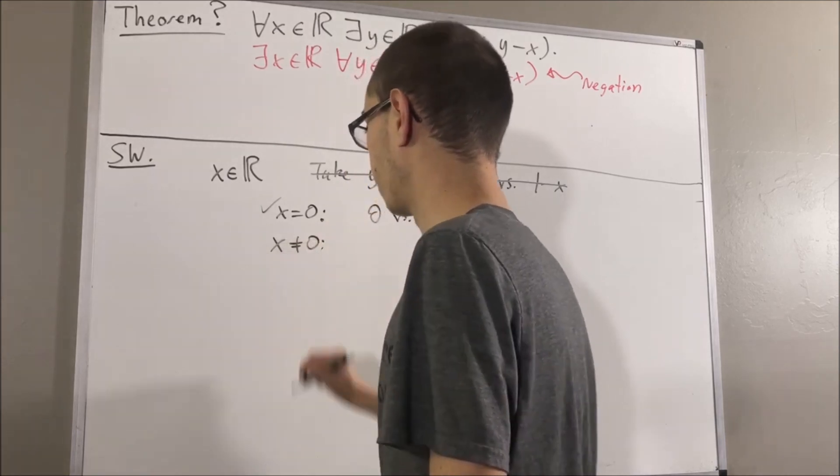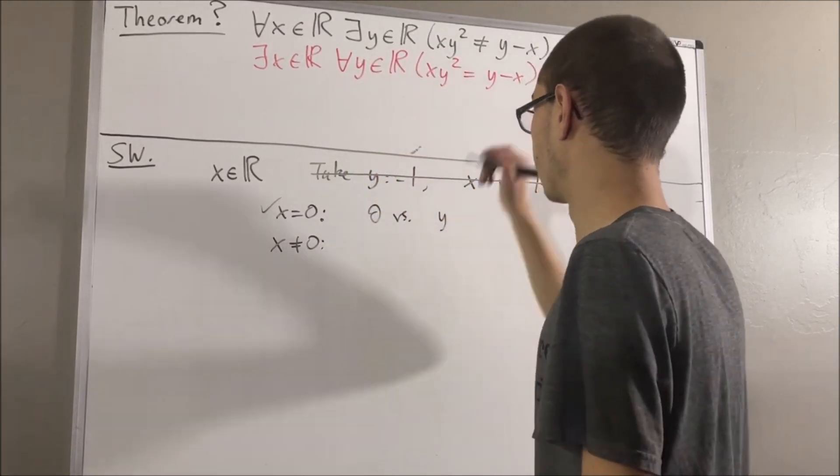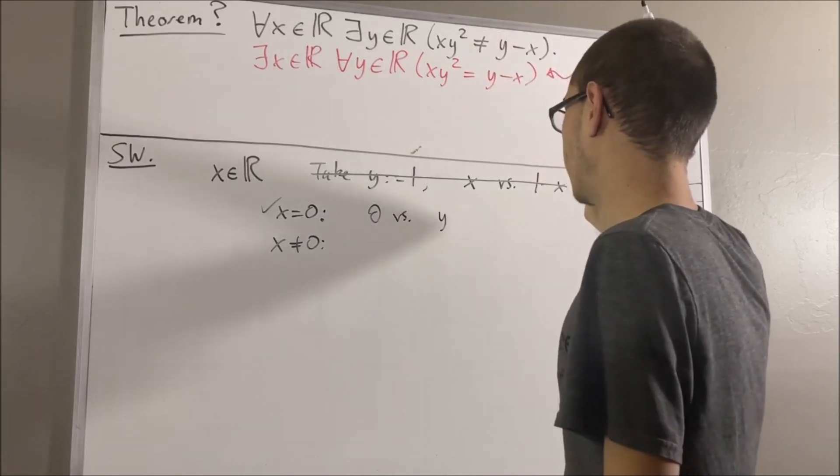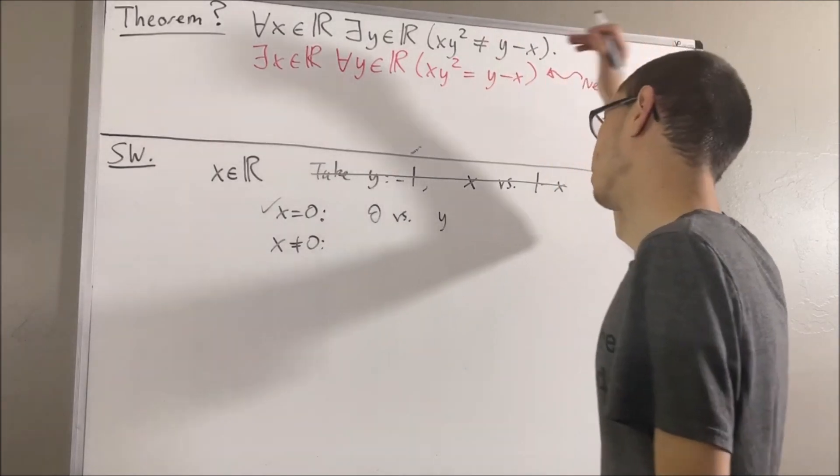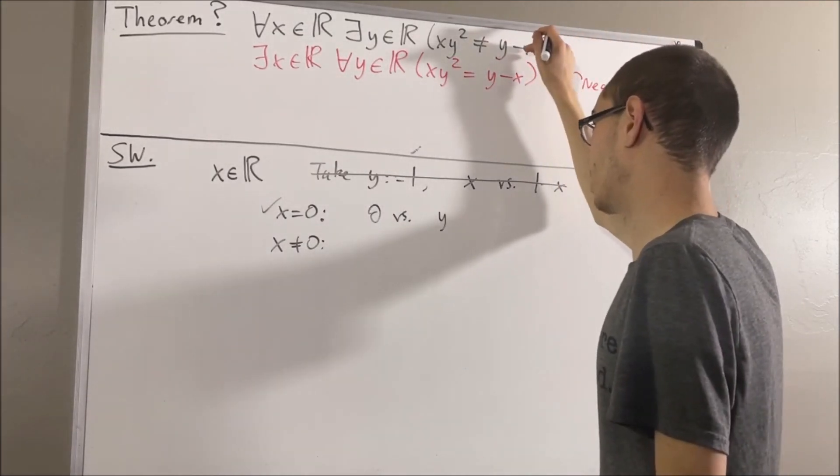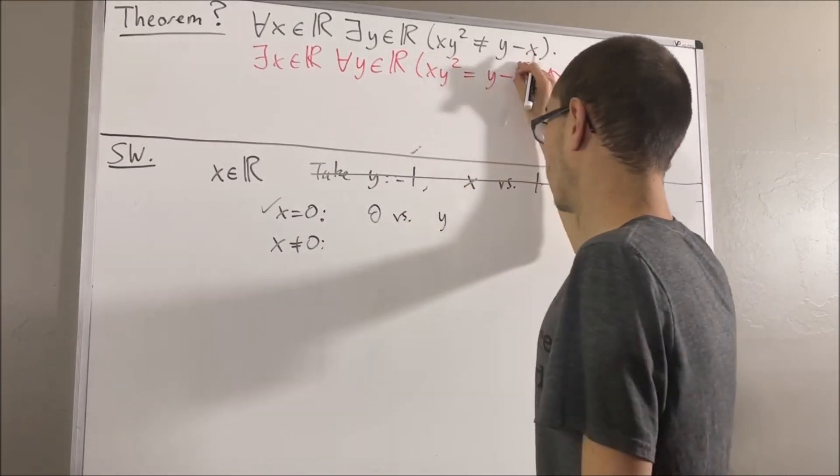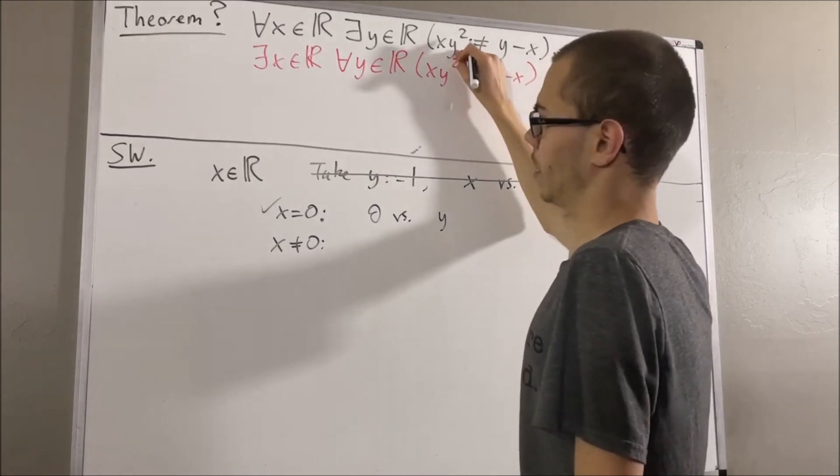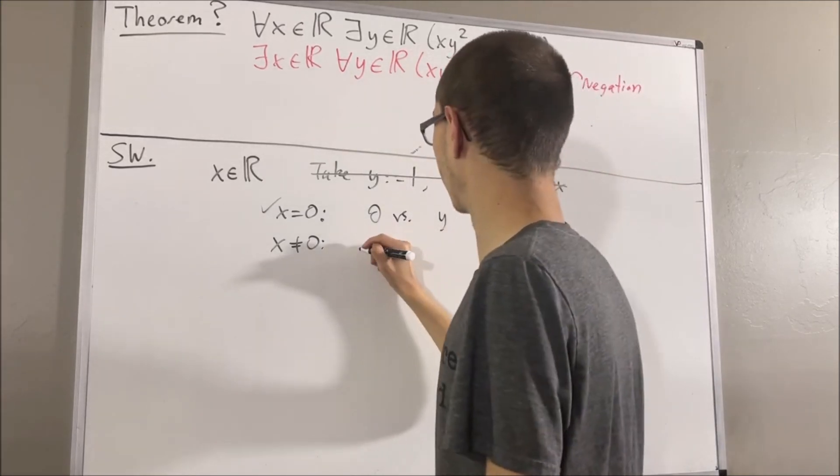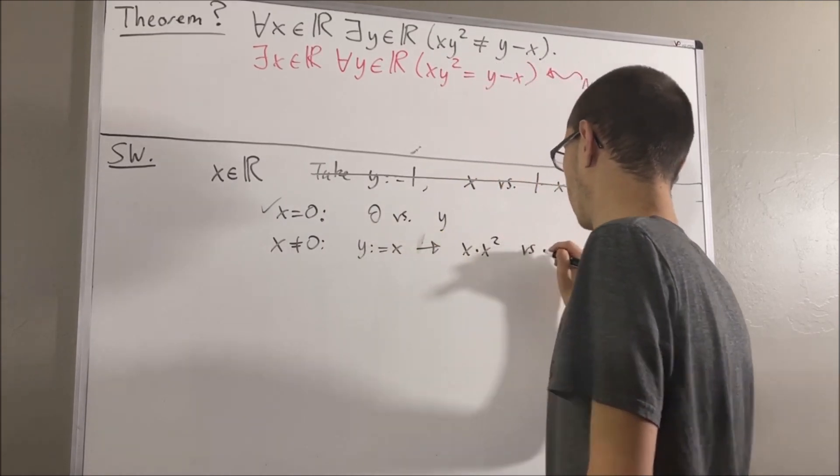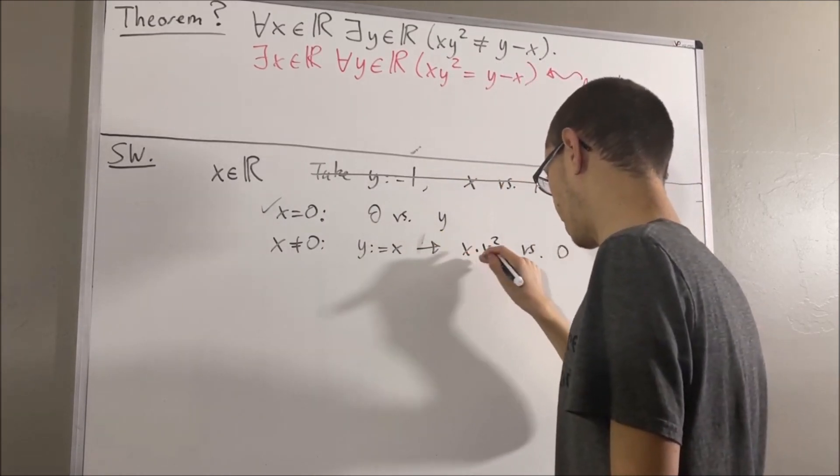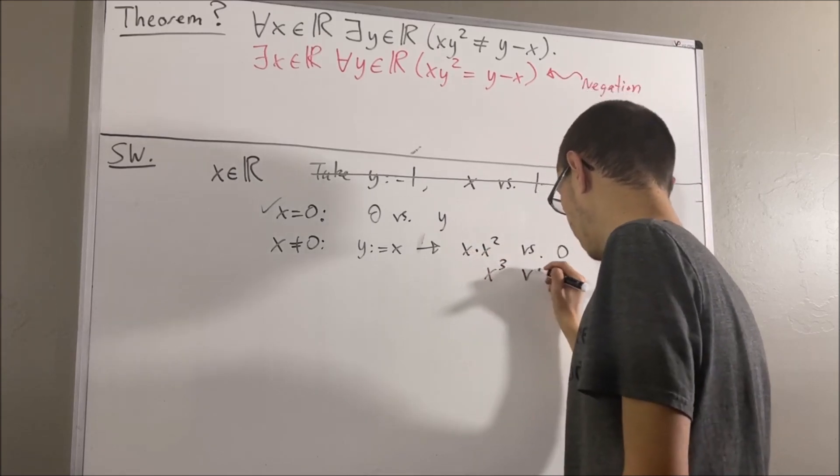x is not equal to zero. Well, what should we choose y to be? Maybe we should choose y to be x, because then the right-hand side would be zero. The left-hand side, it wouldn't be zero, right? So then x times x squared is x cubed. So we really have x cubed versus zero.